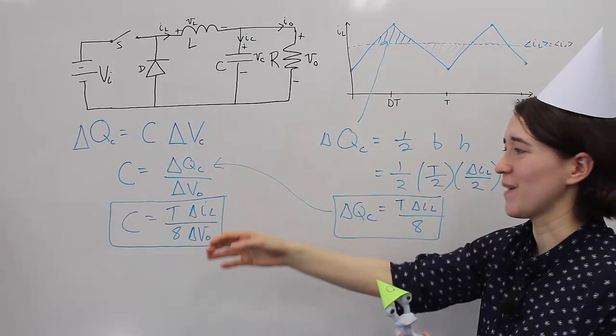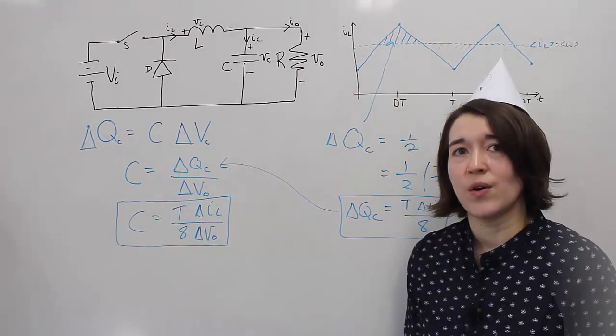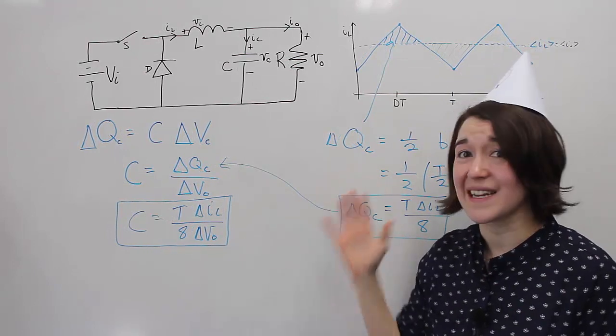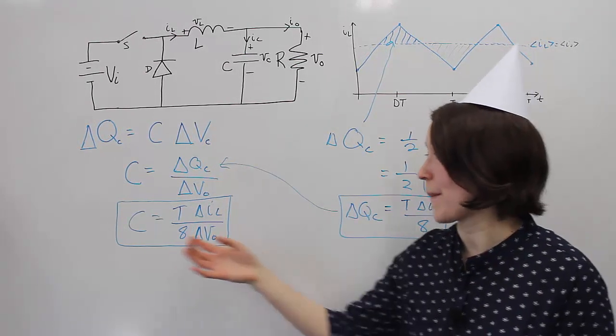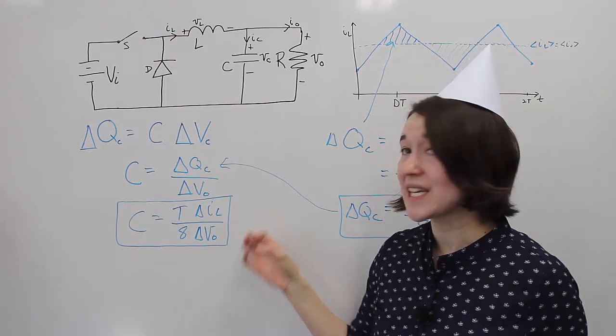One last note is that this is an idealized calculation for the capacitance value. And if you want to decrease the ripple, you would increase this capacitance value to maintain a steady voltage at the output.